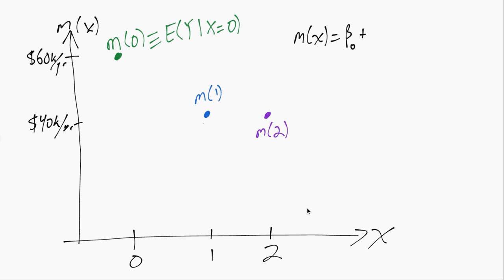M of x equals beta naught plus beta 1 times an indicator that x equals 1 plus beta 2 times an indicator that x equals 2.